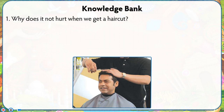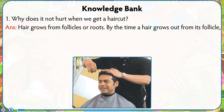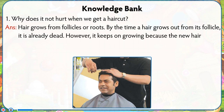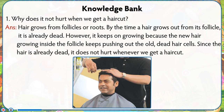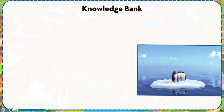Knowledge Bank. One: Why does it not hurt when we get a haircut? Answer: Hair grows from follicles or roots. By the time a hair grows out from its follicle, it is already dead. However, it keeps on growing because the new hair growing inside the follicle keeps pushing out the old dead hair cells. Since the hair is already dead, it does not hurt whenever we get a haircut.